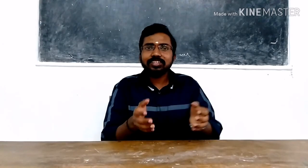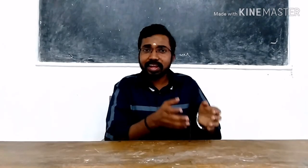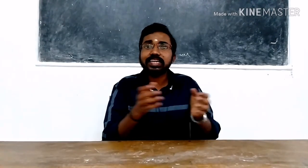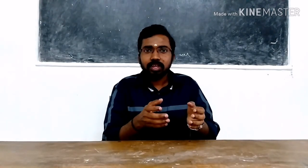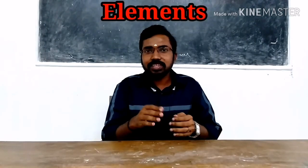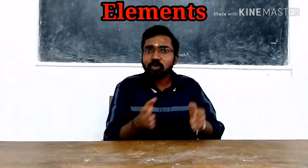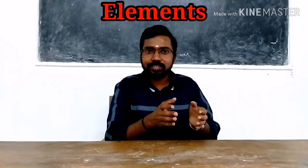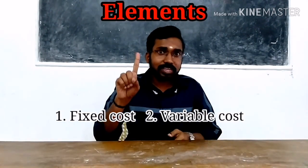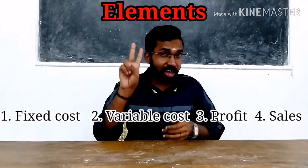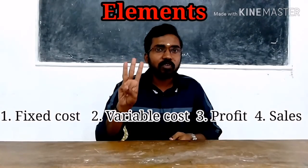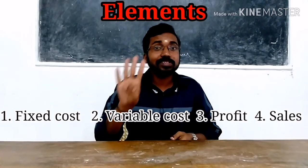For managerial decision making, managers can use the marginal costing technique. Mainly four elements are there for the breakdown of total sales: number one, fixed cost; number two, variable cost; number three, profit; number four, sales.